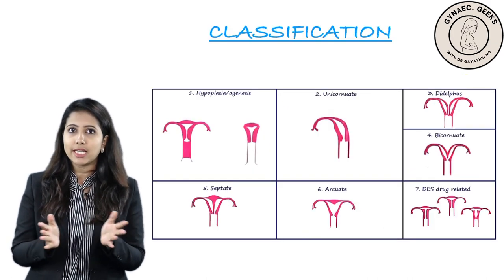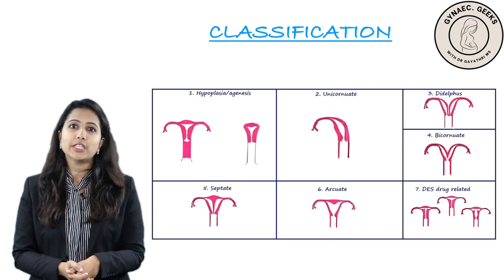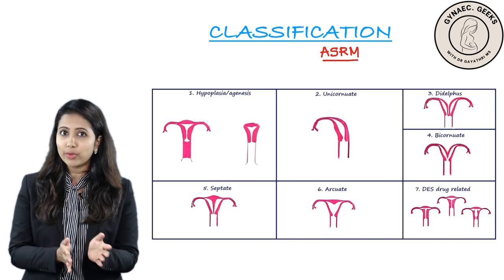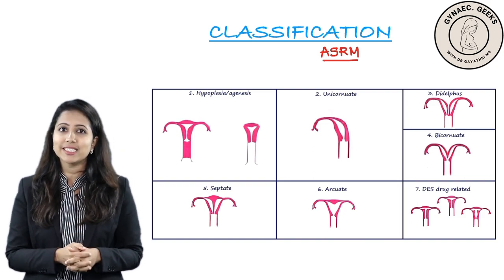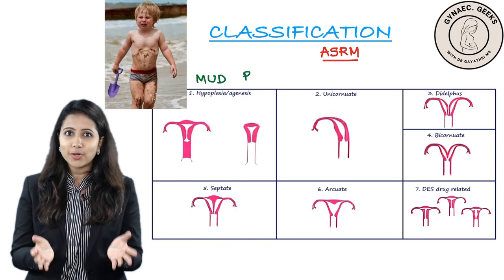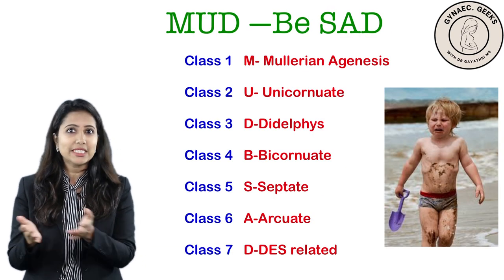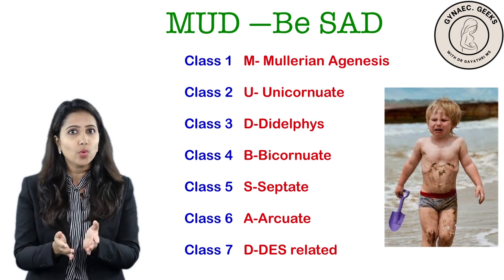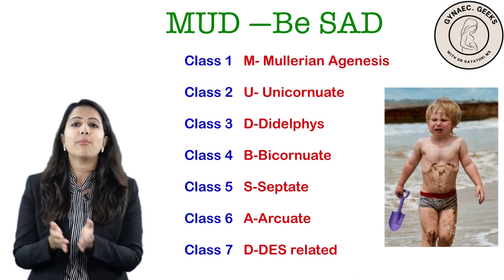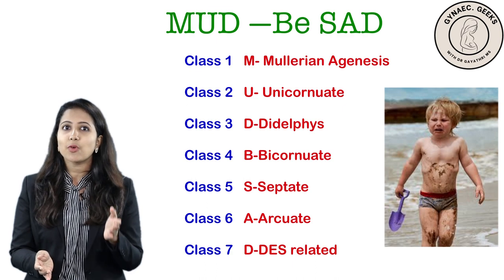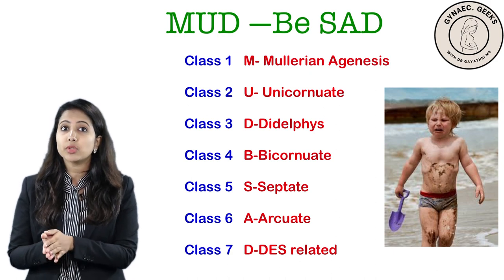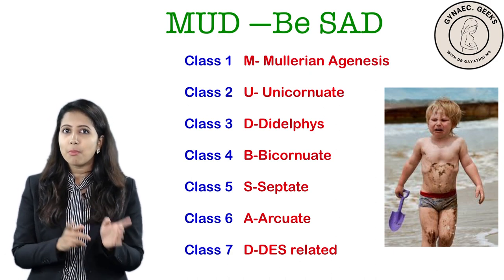This is the ASRM classification — the American Society of Reproductive Medicine. Please don't be scared by the diagram; there is a very easy mnemonic to memorize it. Just remember: mud be sad. When you have mud on yourself, you will be sad. M is for Mullerian agenesis, U is unicornuate uterus, D is uterine didelphys, B is bicornuate uterus, S is septate, A is arcuate, and D is DES-related — related to the drug diethylstilbestrol.